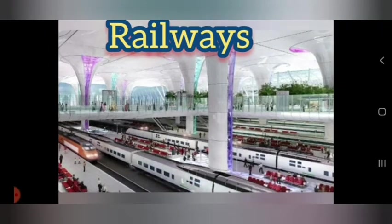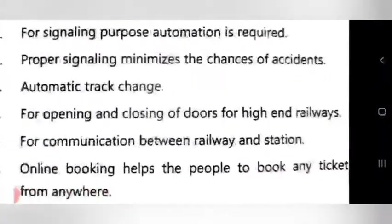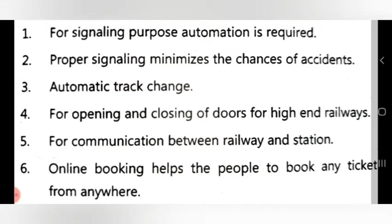The next application is in railways. First, for signaling purposes, automation is required. Second, proper signaling minimizes the chance of accidents. If proper signaling exists based on automation in railways, the chances of accidents are reduced.